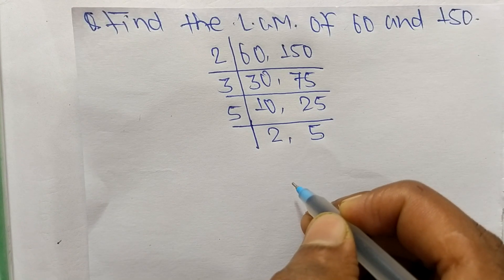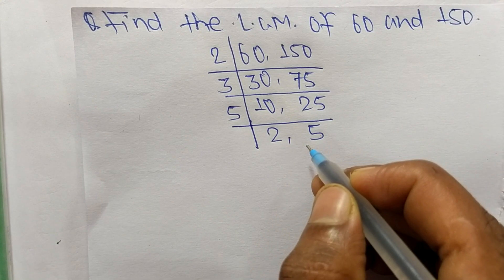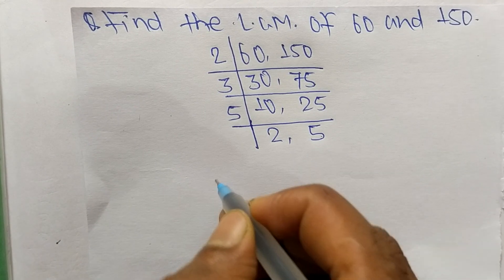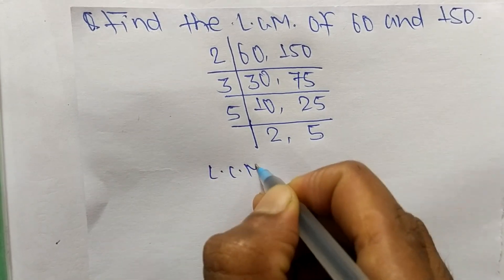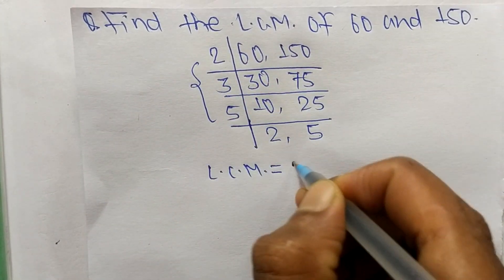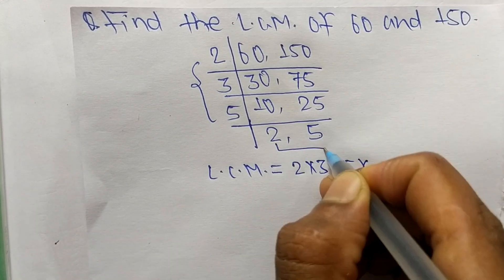At last we have 2 and 5 which is not exactly divisible by the same number. So the LCM is equal to 2 times 3 times 5 from the divisors, and 2 times 5 from the final row.